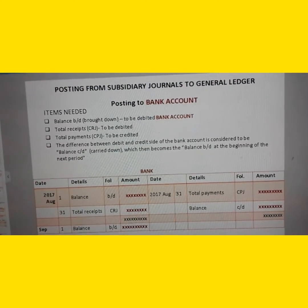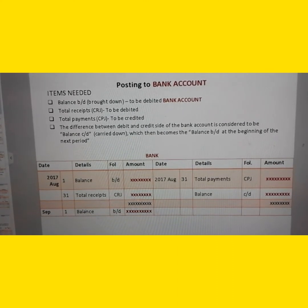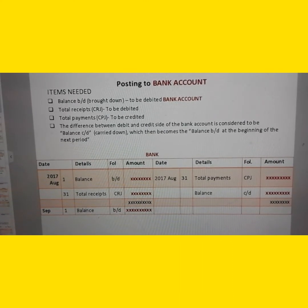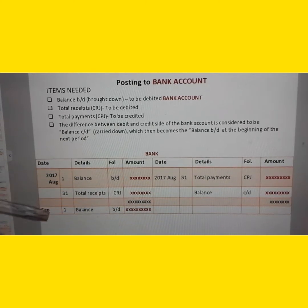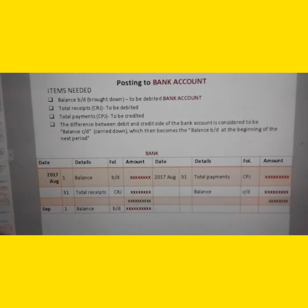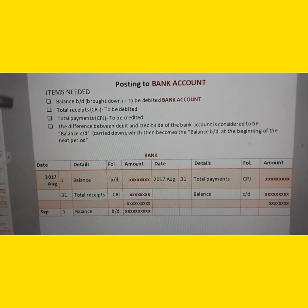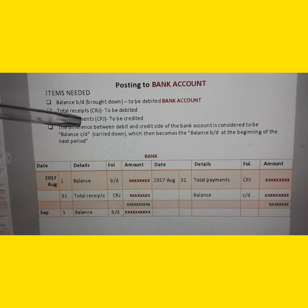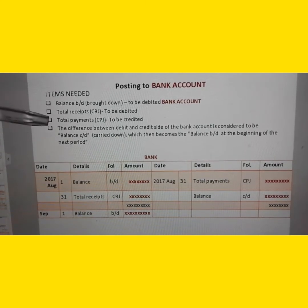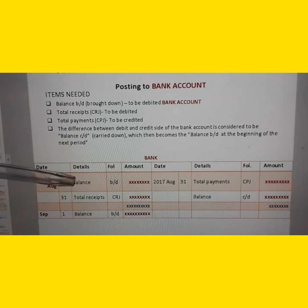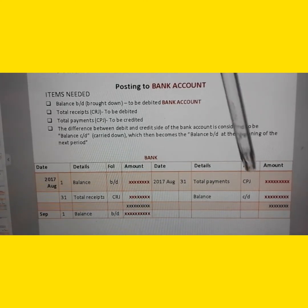The first thing I want to show you is how to post information from the subsidiary journals to the bank account. The items you need in your bank ledger account are: the balance brought down, which is debited; the total receipts, which needs to be credited; and the total payment, which is also credited. The balance brought down is always provided. The total receipts come from the cash receipt journal, and the total payment comes from the cash payment journal.